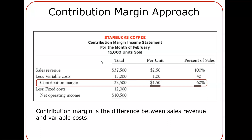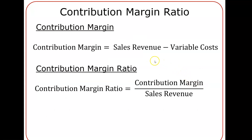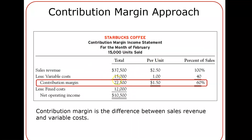The second important thing in this chapter is the contribution margin approach. A contribution margin takes sales revenue, subtracts variable costs, and produces something called a contribution margin — what's left to contribute to covering fixed costs, which is why it's called a contribution margin. There are formulas, but you don't need to memorize them — you just need to know how to set up the statement, and we'll do some examples.